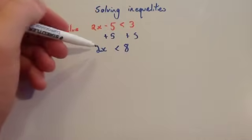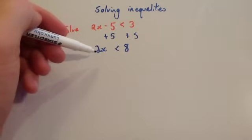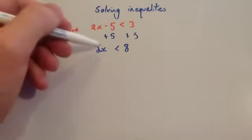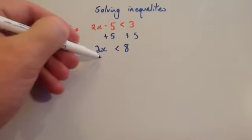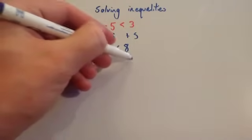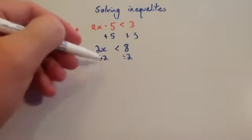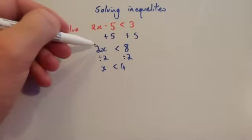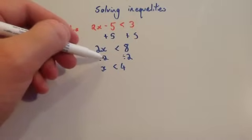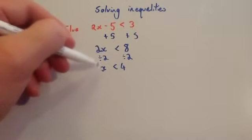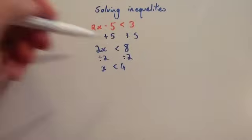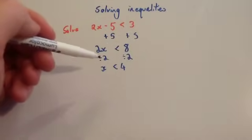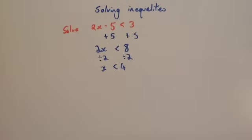You want to get rid of the times by 2, because that's 2 times x is less than 8, so you're going to divide by 2 on both sides. That's going to give you x is less than 4. So 2x divided by 2 is just x, and 8 divided by 2 is 4. So you know that x is going to be less than 4 — that's it, you've solved the inequality.